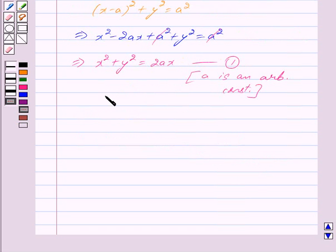Now, since there is only one constant, we shall differentiate equation 1 only once to get the required differential equation.